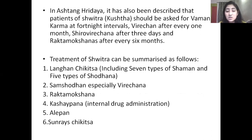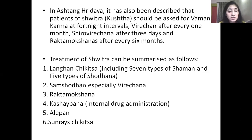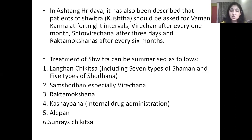Treatment of Shwitra can be summarized as follows: Langhan Chikitsa including seven types of Shaman and five types of Shodhan, Sanshodhan especially Virechan, Raktamokshana, Kashayapan or internal drug administration, then Alepan and Sunray Chikitsa. So, these are the simplest steps which are usually done in Shwitra Roga Chikitsa.